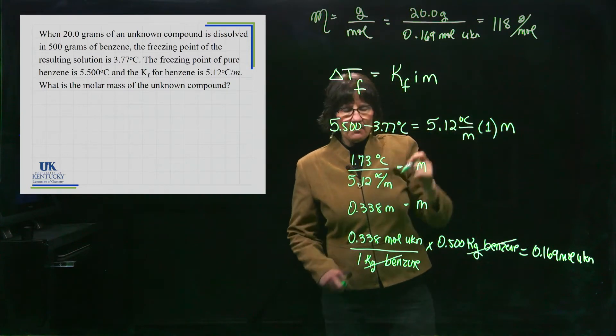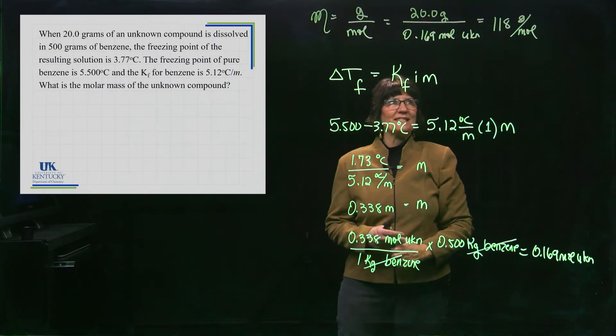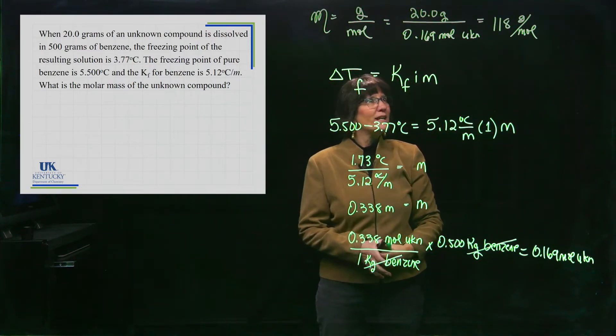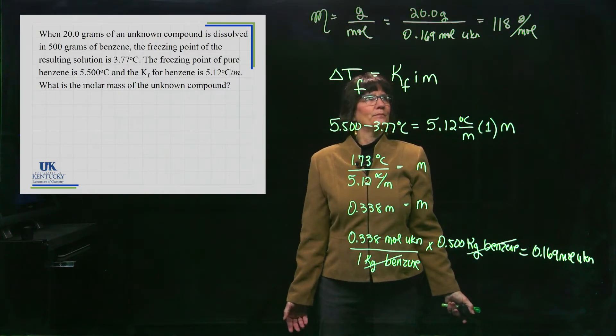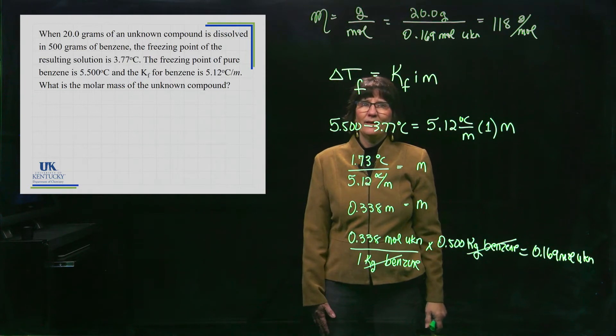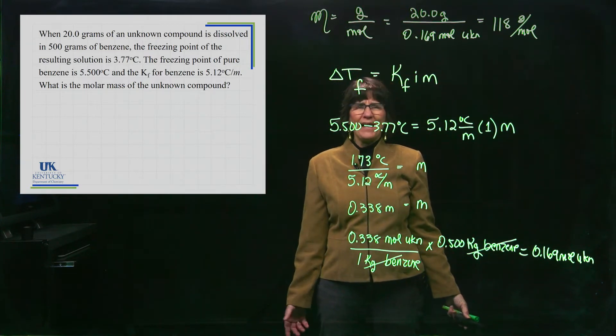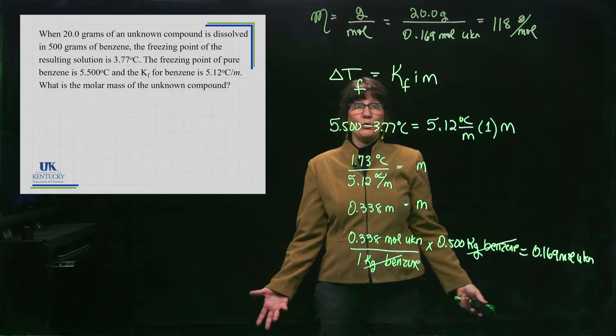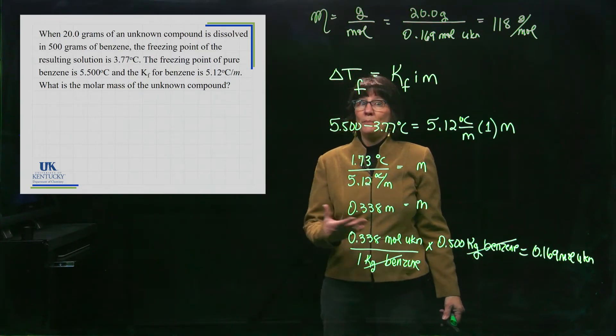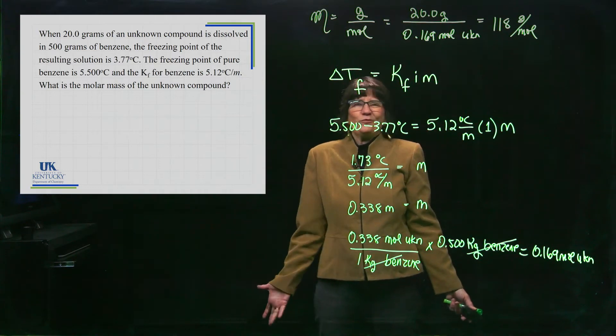When you see this number, you should always stop and think, is that reasonable? Is that a reasonable molar mass? Yes. What would be unreasonable? Something less than one. One is the molar mass of hydrogen. If it's going to be a compound, it's got to be more than one. It's got to be more than two. It's going to be some number bigger than that. Helium is four. There's no compound that's between one and four.